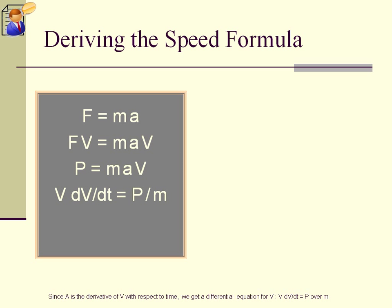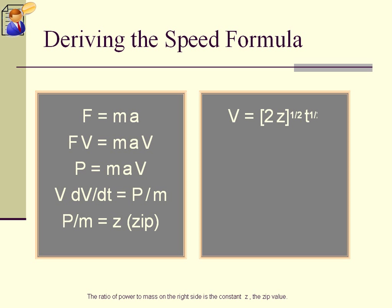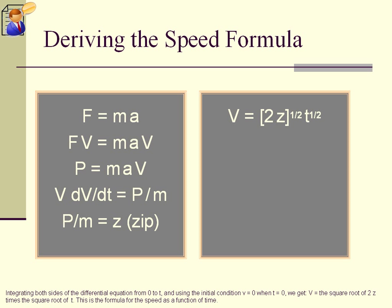Since A is the derivative of V with respect to time, we get a differential equation for V: VdVdt equals P over M. The ratio of power to mass on the right side is the constant Z, the Zip value. Integrating both sides of the differential equation from 0 to T, and using the initial condition V equals 0 when T equals 0, we get V equals the square root of 2Z times the square root of T. This is the formula for the speed as a function of time.